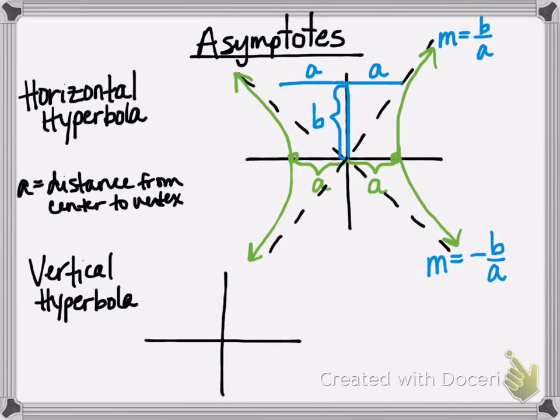So vertical hyperbola, now we're going to travel up and down a distance of A from the center. So if I go down to get to my vertex, there's my vertex, there's my distance of A. And then likewise, I would travel up a distance of A to get to my other vertex.